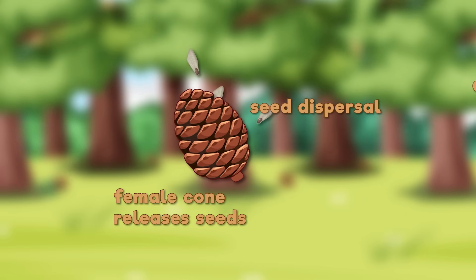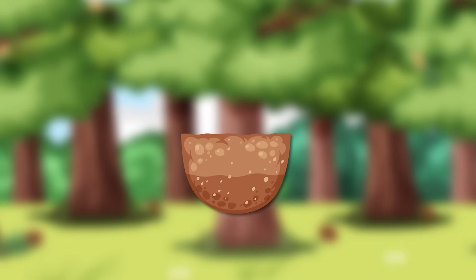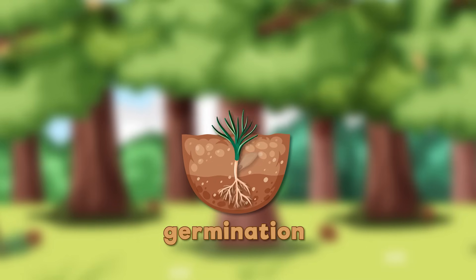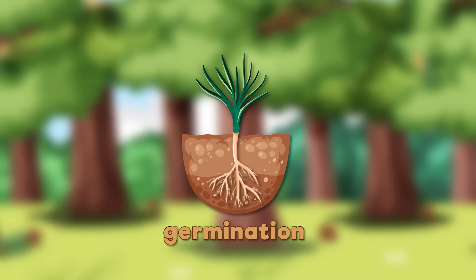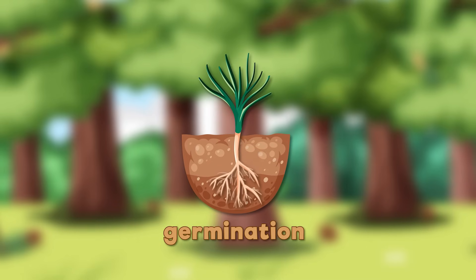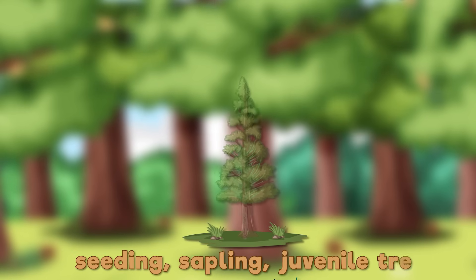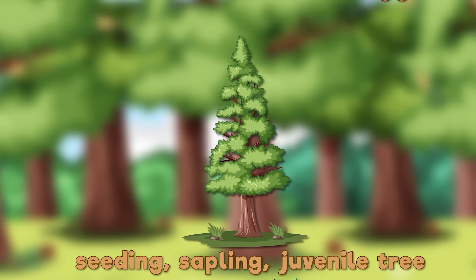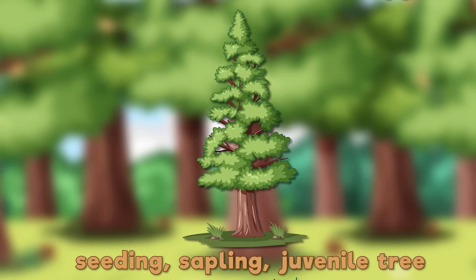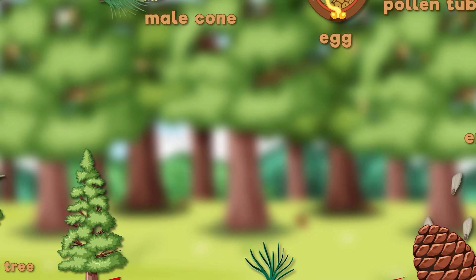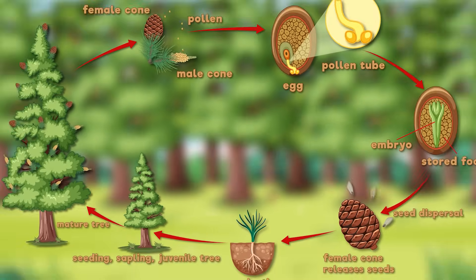Some land in the perfect spot to grow, and if conditions are just right, the seed germinates, sending out roots and a tiny shoot. Over time, the seedling grows into a sapling and then a juvenile tree. Eventually, it becomes a mature pine tree, ready to produce cones and begin the cycle all over again.